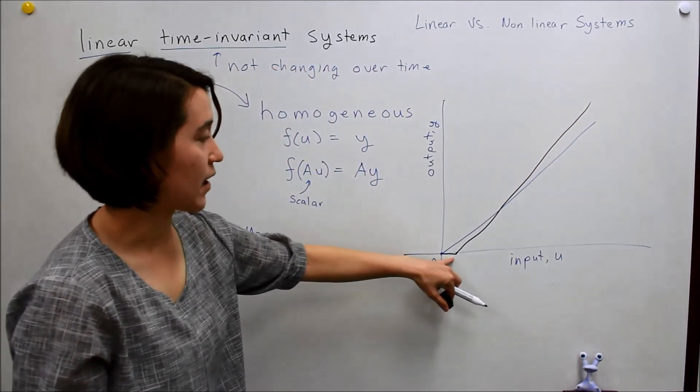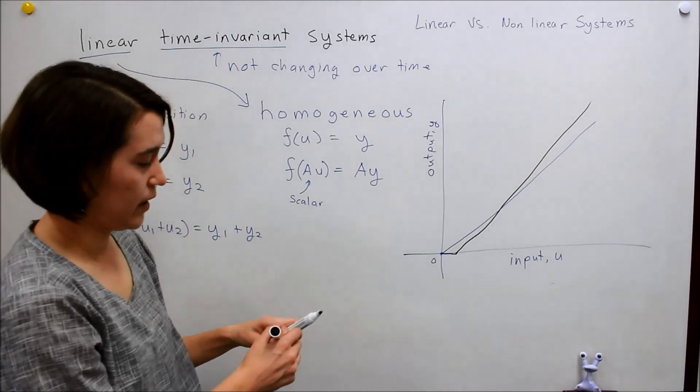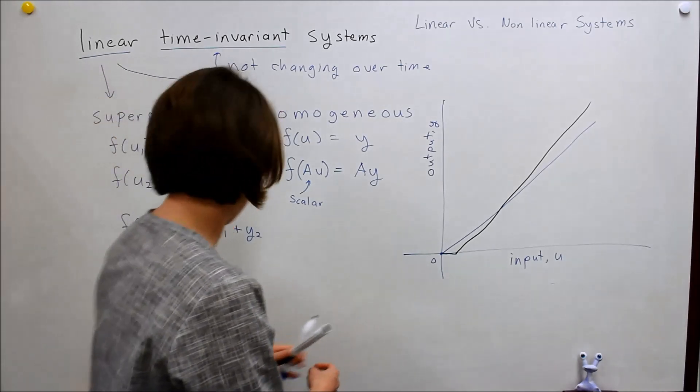Because this is not going through zero, that's actually a non-linear system. And there's lots of other examples of non-linear systems.